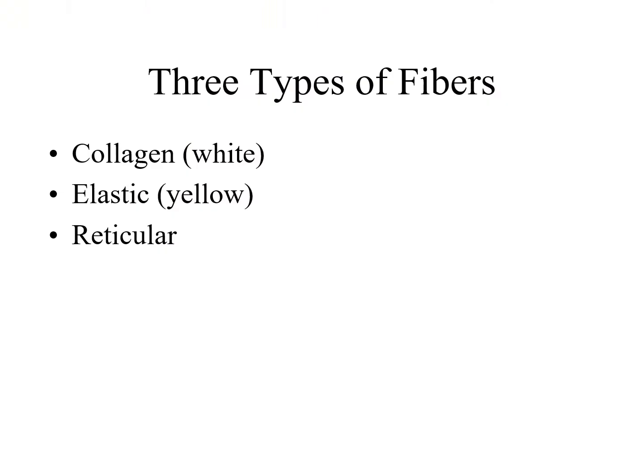There are three types of fibers common in connective tissues. Number one: collagen, or white fibers. Number two: elastic, or yellow fibers. Number three: reticular fibers. Yellow and white describe the color these fibers appear in tissue, but we normally call them collagen and elastic. Note that reticular fibers are actually built from collagen.